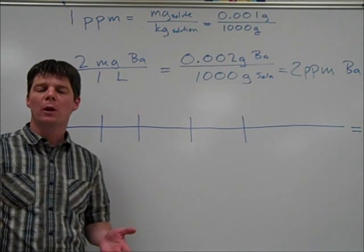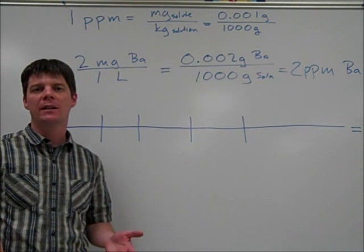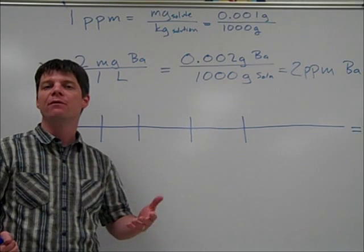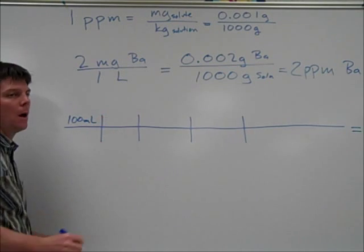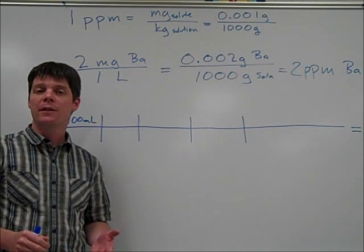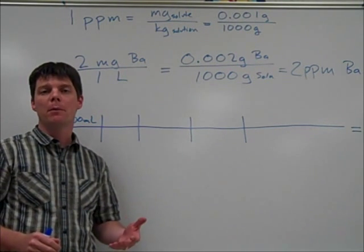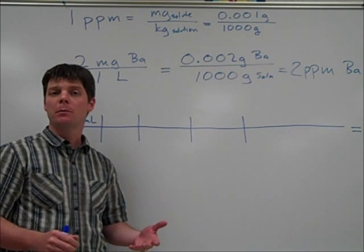To solve this problem, we're going to use the dimensional analysis technique. Let's begin with the volume of the sample that we're working on here—that's 100 milliliters. We're going to need to convert that to liters first. We need to remember that in one liter there are 1,000 milliliters.